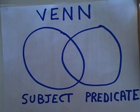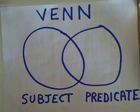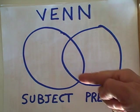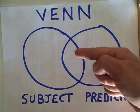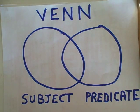When we draw our two circles, we're going to put one on the left and one on the right, and they're going to overlap and have a little bit in the middle that represents where the subject has the predicate.